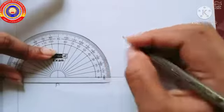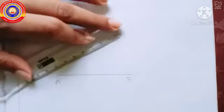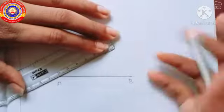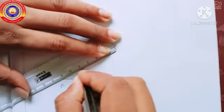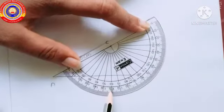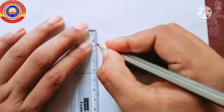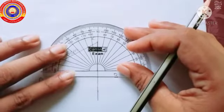First draw a line with any measurement and name it AB. Place the protractor at point A and mark 30 degrees. Draw a line slanted at an angle of 30 degrees at one end. On this line, mark a point C such that AC is 6 centimeters long. Then place the protractor at point C and mark 60 degrees. At C, draw a line making an angle of 60 degrees with AC — this line makes a right angle at B, that is, angle B is 90 degrees.